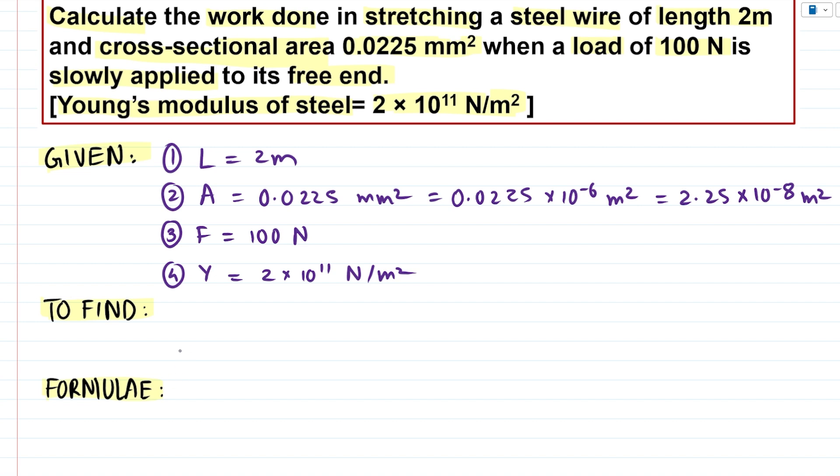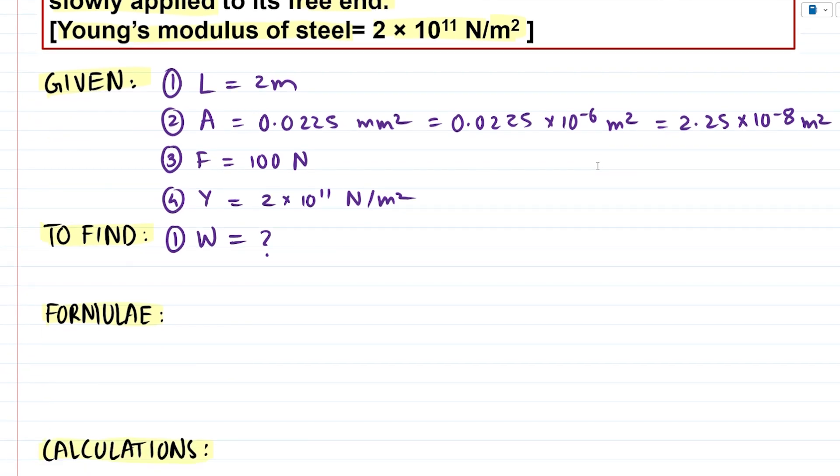Now using all this given data, we are asked to calculate the work done in stretching the wire. So W we represent work done as capital letter W and we have to find that. So that's unknown to us.